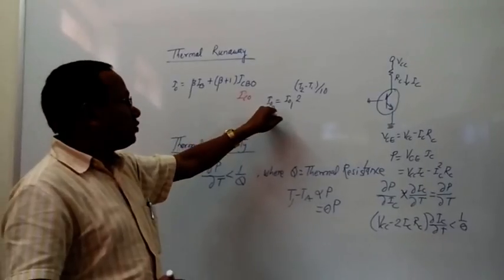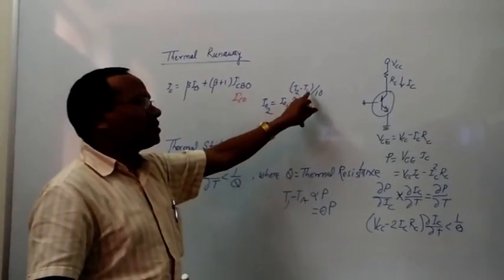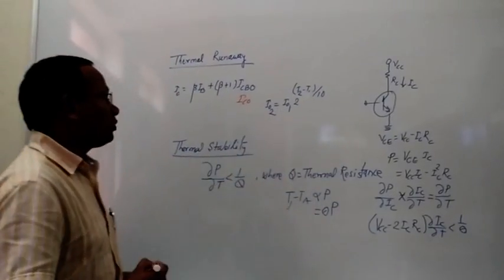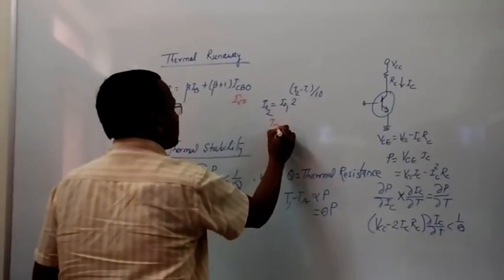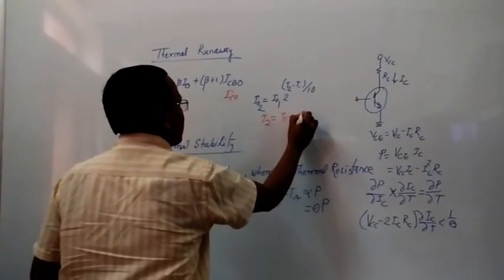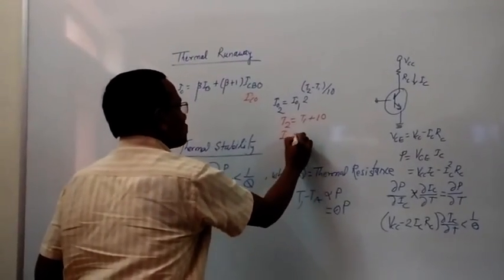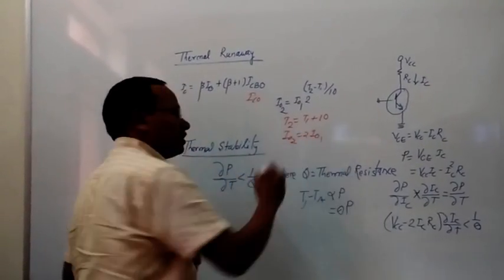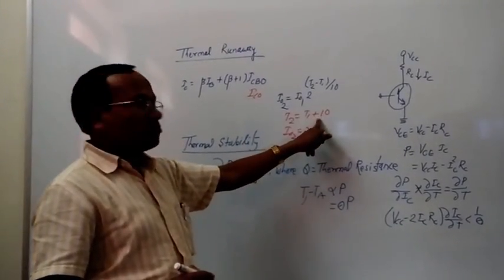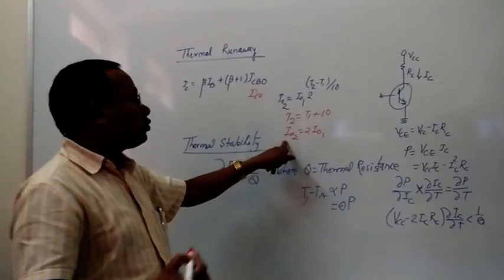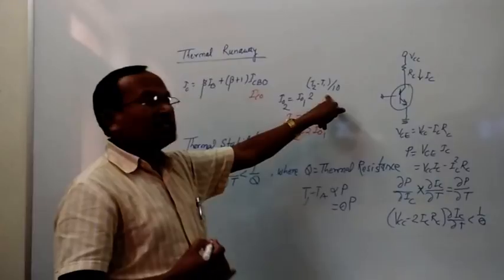Here, I02 is the value of I0 at temperature T2, and I01 is the value of I0 at temperature T1 in the PN junction diode. There is a very important result: if T2 = T1 + 10, then I02 = 2·I01. The conclusion is that for every 10 degree centigrade rise in temperature, the reverse saturation current doubles.